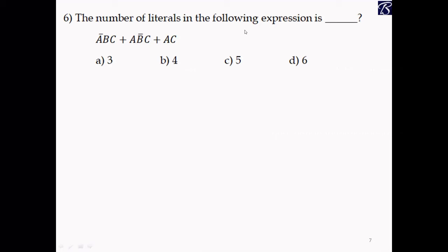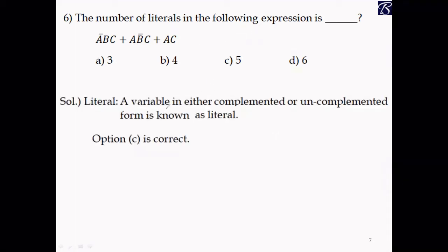Problem 6: We need to find the number of literals in a given expression. A literal is a variable in either complemented or uncomplemented form. In the given expression: Ā is the 1st literal, B is the 2nd, C is the 3rd, A is the 4th, and B̄ is the 5th. Repeated occurrences of C and A are not counted again, so there are 5 literals total. Option C is correct.